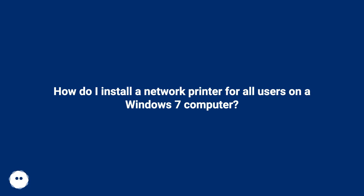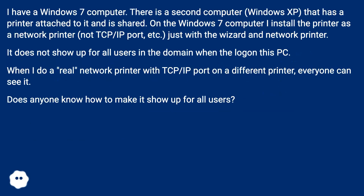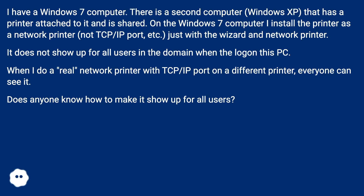How do I install a network printer for all users on a Windows 7 computer? I have a Windows 7 computer. There is a second computer, Windows XP, that has a printer attached to it and is shared. On the Windows 7 computer I install the printer as a network printer, not TCP type E port, just with the wizard and network printer. It does not show up for all users in the domain when they log on to this PC.